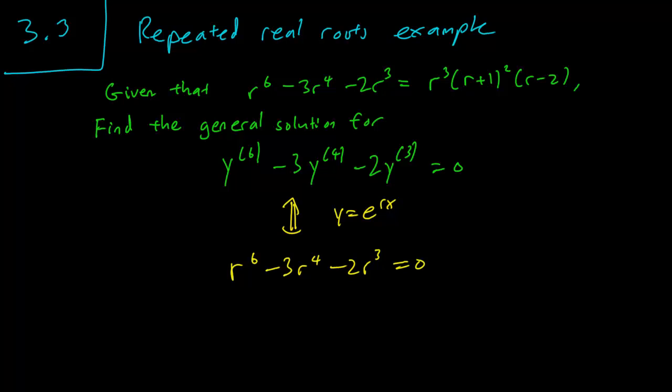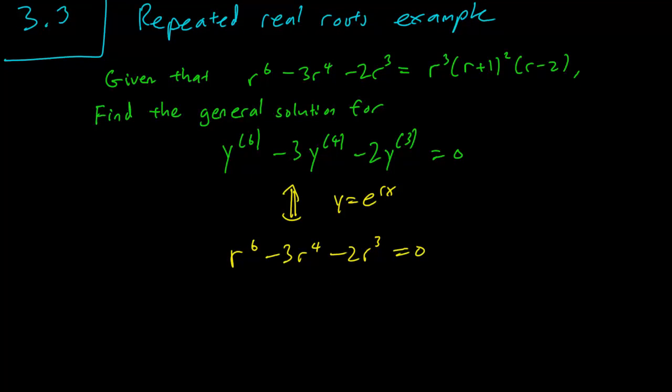Anyway, we take the characteristic equation and we already know the roots. So the roots are R equals 0 for multiplicity 3, R equals -1 of multiplicity 2, and R equals 2 of multiplicity 1.